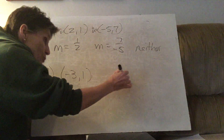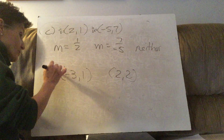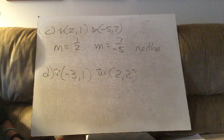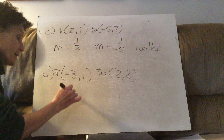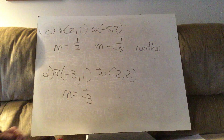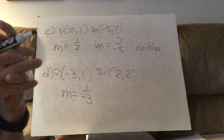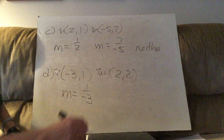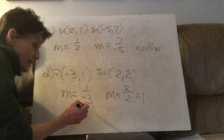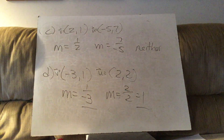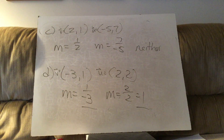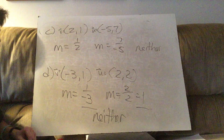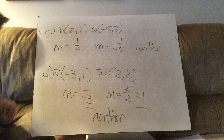Problem D: vectors (-3,1) and (2,2). Slope of the first is y over x = 1 over negative 3. Slope of the second is 2 over 2, which is 1. Are they the same? No. Are they opposite reciprocals? No. So these two vectors are neither parallel nor orthogonal.